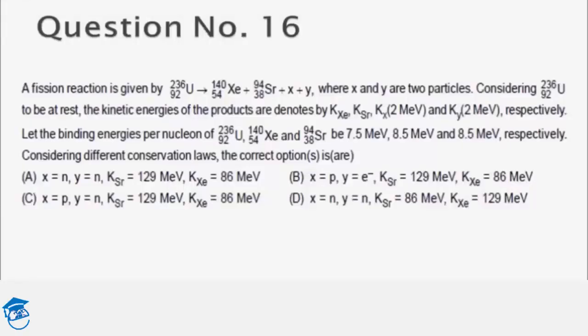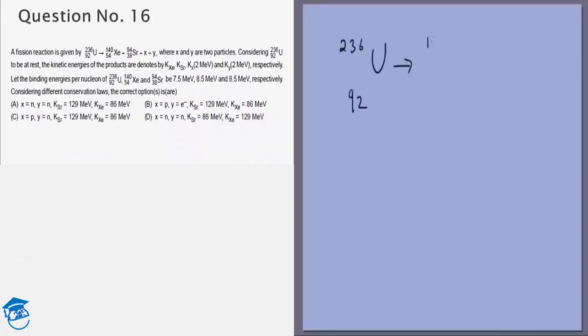Let's look at the next question. We are given a reaction: 236 U 92 goes to 140 54 Xe plus 94 38 Sr plus X plus Y.